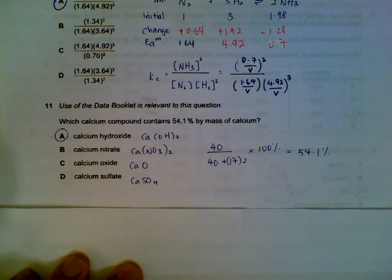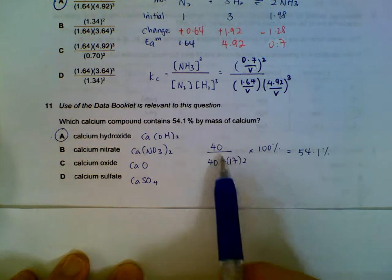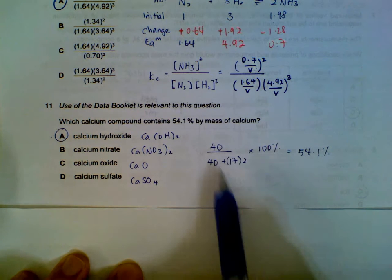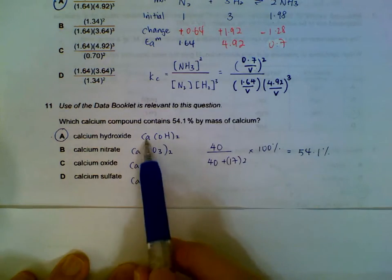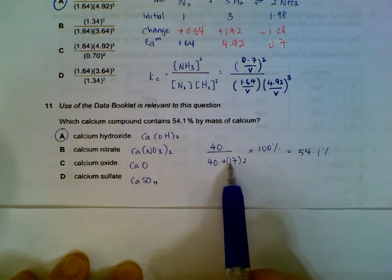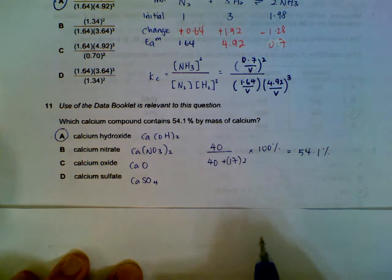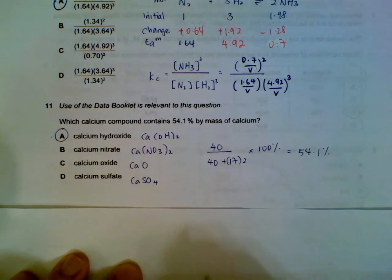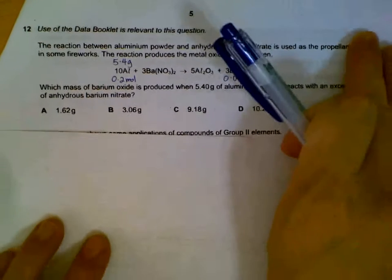Question 11: which one contains 54.1% of calcium. This is a trial and error question. Find the MR of the compound and then the amount of calcium that contributes to the MR on top, then multiply by 100%. For calcium hydroxide: 40 plus (oxygen and hydrogen) times 2 gives us 54.1%. If it doesn't work for the first option, keep trying the rest.